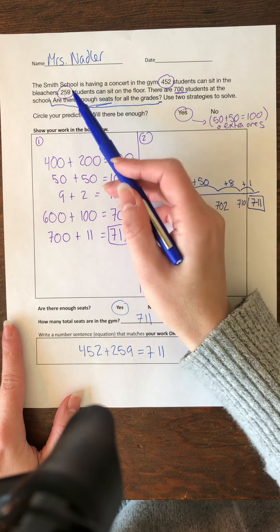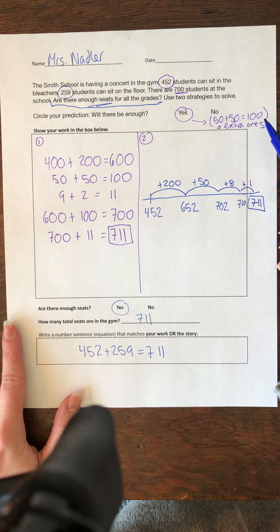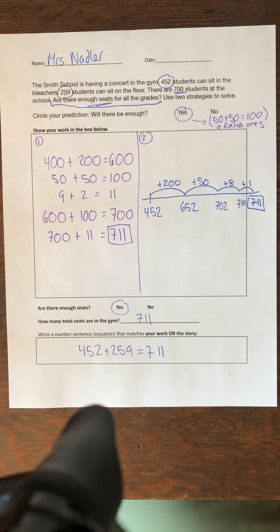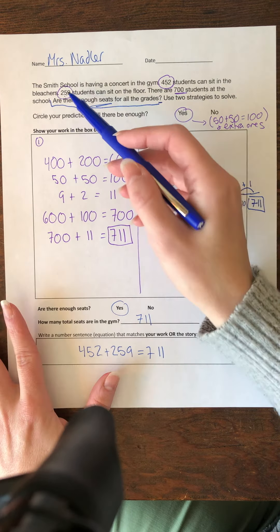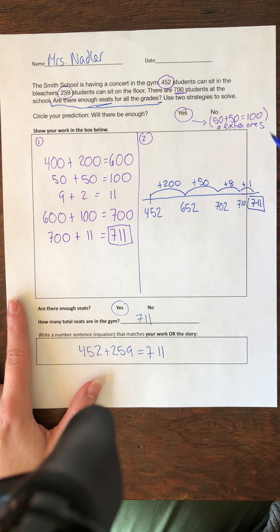But then I went to my tens and I saw that there were two fifties and I know that two fifties equals a hundred. And so if I'm already adding that to my hundreds, I'm already going to get to 700 and I know that there are these ones. So I have some extra, so I think there's going to be enough.